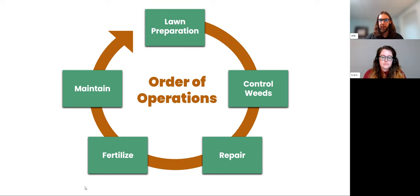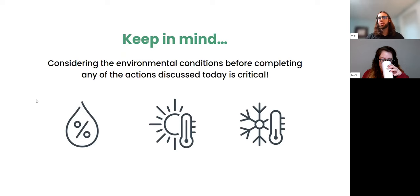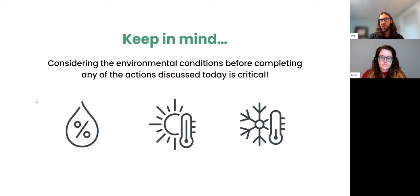Tonight we'll cover: first, controlling weeds; second, repairing the lawn; third, fertilizing the lawn; and lastly, maintaining — a section on common changes or concerns you may see over the course of the year and how best to address them. Keep in mind that with each of these components, the environment is crucial. Is it a rainy day? If so, we might need to adjust when we're completing these actions. If it's too early in the season, we may want to hold off on some practices.